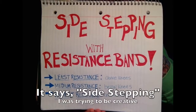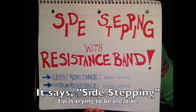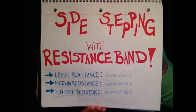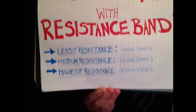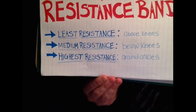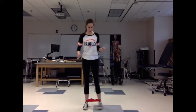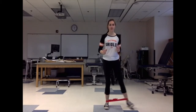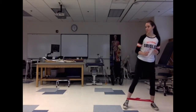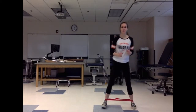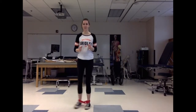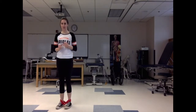Side stepping is also a good way to strengthen the gluteus medius muscle with 3 out of 5 strength. When patients are ready for a greater challenge, a resistance band can be used. The positioning of the band determines the level of resistance: the least resistance is when the band is looped above the knees, medium resistance is when positioned below the knees, and the highest resistance is when the band is positioned around the ankles.